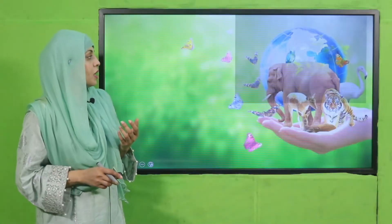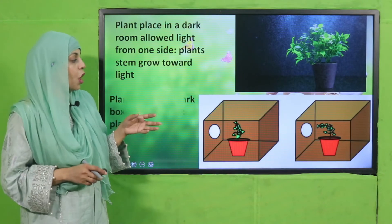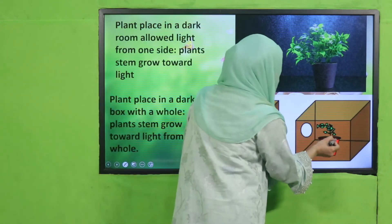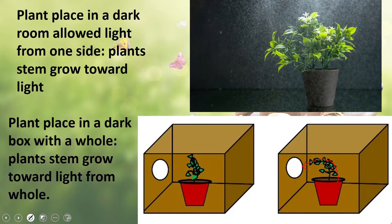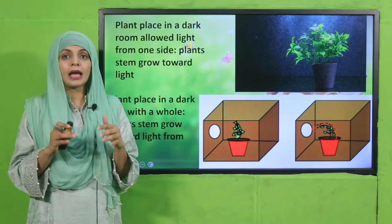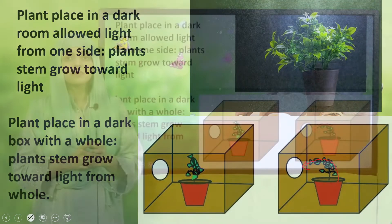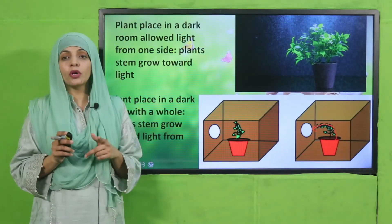Here you can see: take a pot, keep it in the dark box, and after three weeks note that the plant stem grows towards the hole where light enters. This demonstrates that plants respond to sunlight — the stem and leaves always grow towards sunlight. Pause the video, collect the materials, and perform the experiment with your classmates. You will thoroughly enjoy it. After three weeks, record the observations.